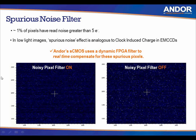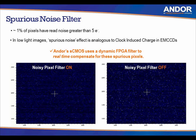An image shows the spurious noise filter on the left (filter on) versus the right (filter off). With the filter off, a salt-and-pepper effect appears — all of those read noise values which are above five electrons. This is a filter that can be turned off by the user; it can be turned on and off using the software.